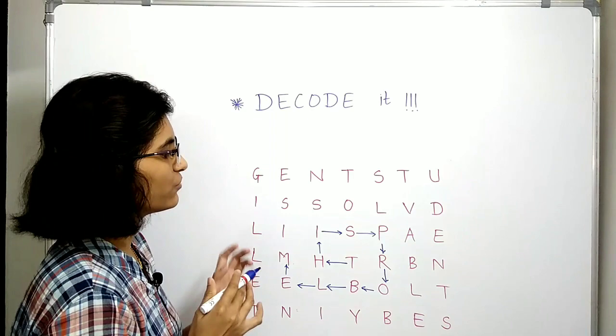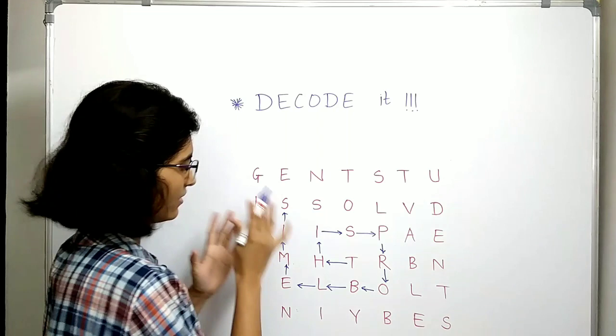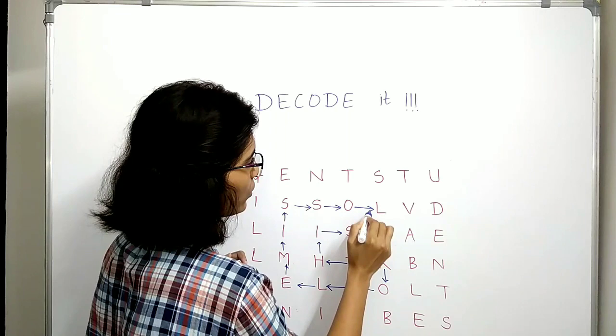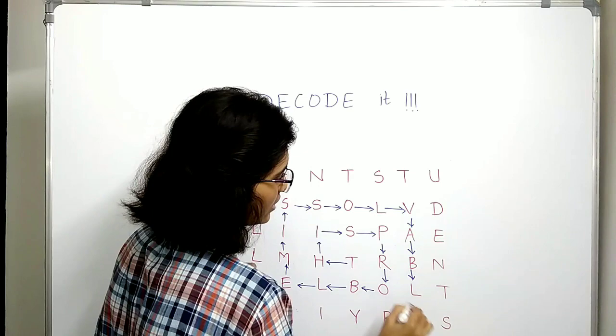Now the next is I-S. Then S-O-L-V-A, follow the same path, B-L-E. The word is 'solvable'. Now just continue the path.